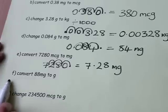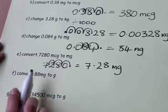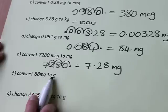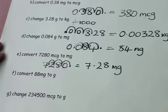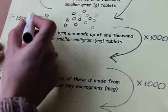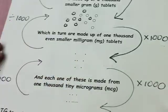Let's have a look at part F. Convert 88 milligrams to grams. Can you guess which way this is going to go? Let's have a look at our chart. Going from milligrams to grams, we're dividing by 1,000.